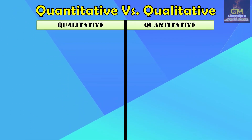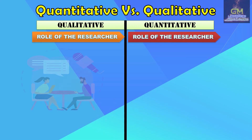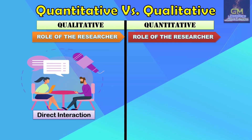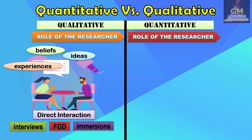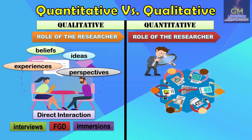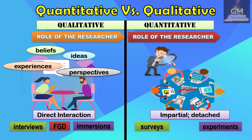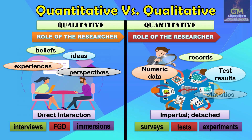Finally, in terms of the role of researcher, in qualitative research the researcher has direct interaction with respondents — through interviews, focus group discussions, or immersions, the researcher gathers the ideas, beliefs, experiences, and perspectives of respondents on a particular topic. While in quantitative research, the researcher is seen to be impartial or detached — through surveys, experiments, and tests, the quantitative researcher gathers data such as test results, records, numeric data, statistics, and interpretation.